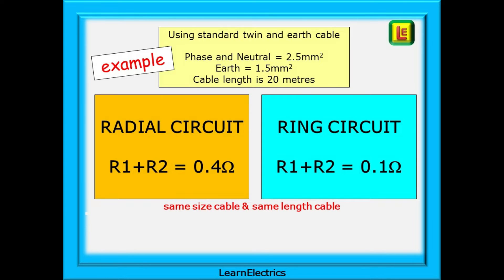In the examples, the phase and neutral are both 2.5mm copper and the earth or CPC is 1.5mm copper. When we measured R1 plus R2 for the radial circuit, we had a resistance value of 0.4 ohms. For the ring circuit — the same length, the same size cable — the resistance was just 0.1 ohms.